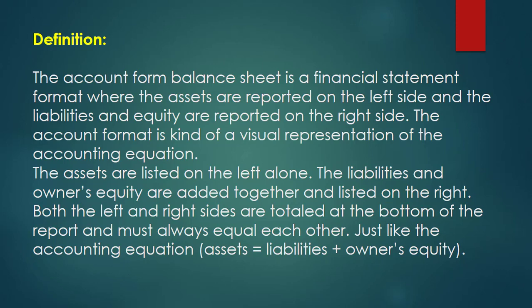The assets are listed on the left alone. The liabilities and owner's equity are added together and listed on the right. Both left and right sides are totaled at the bottom of the report and must always equal each other — just like the accounting equation: assets equal liabilities plus owner's equity.